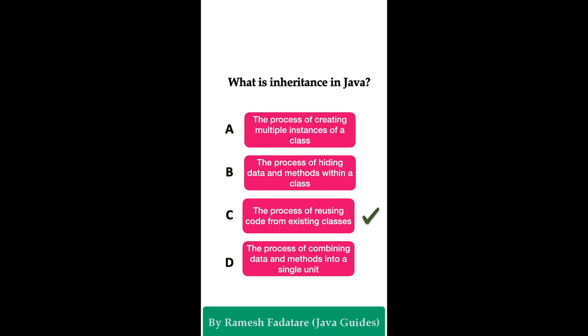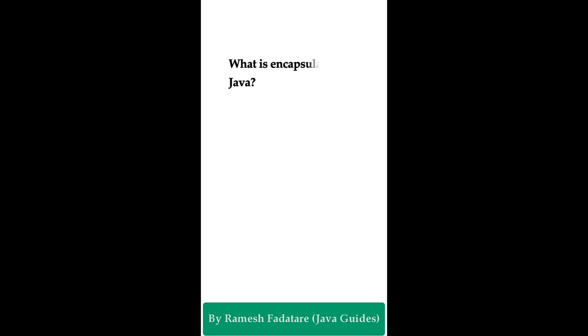The correct answer is option C: the process of reusing code from existing classes. Inheritance is a mechanism in Java that allows a class to inherit properties and methods from another class. It promotes code reusability — a subclass can inherit properties and methods from a superclass, and can also define its own unique properties and methods.